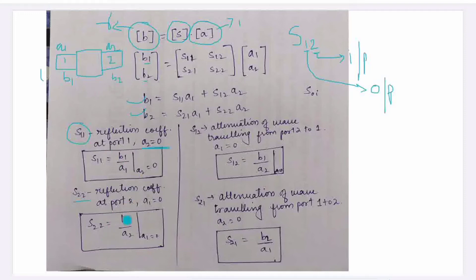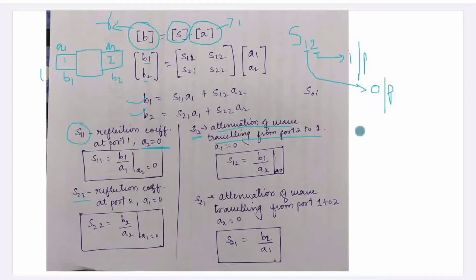S12 is the attenuation of the wave traveling from port 2 to port 1, and its equation is B1 divided by A2 when a1 is 0. Scattering parameter is a ratio of reflected wave to incident wave.